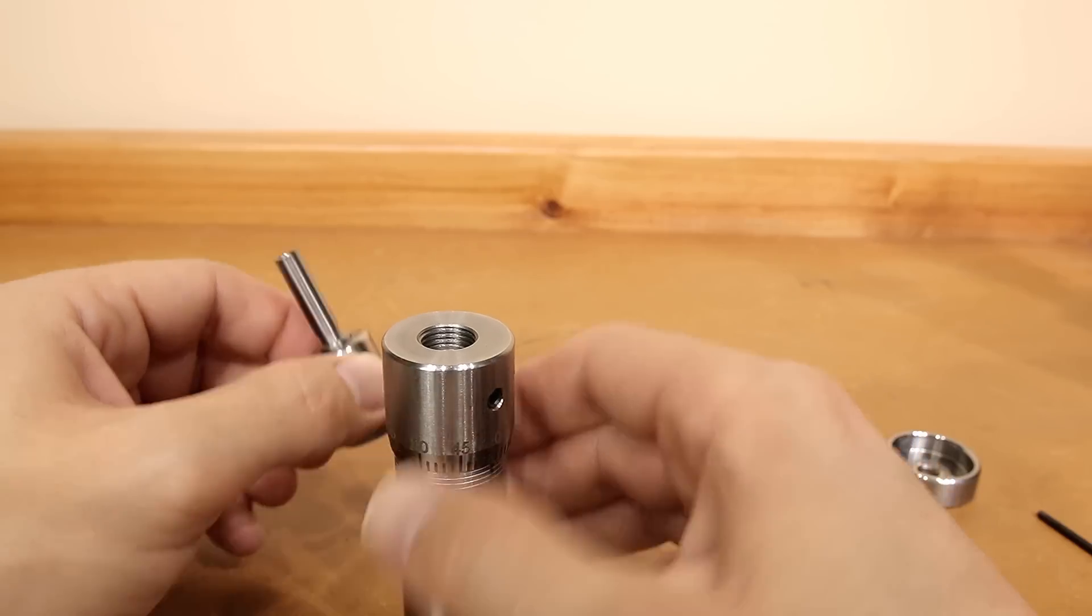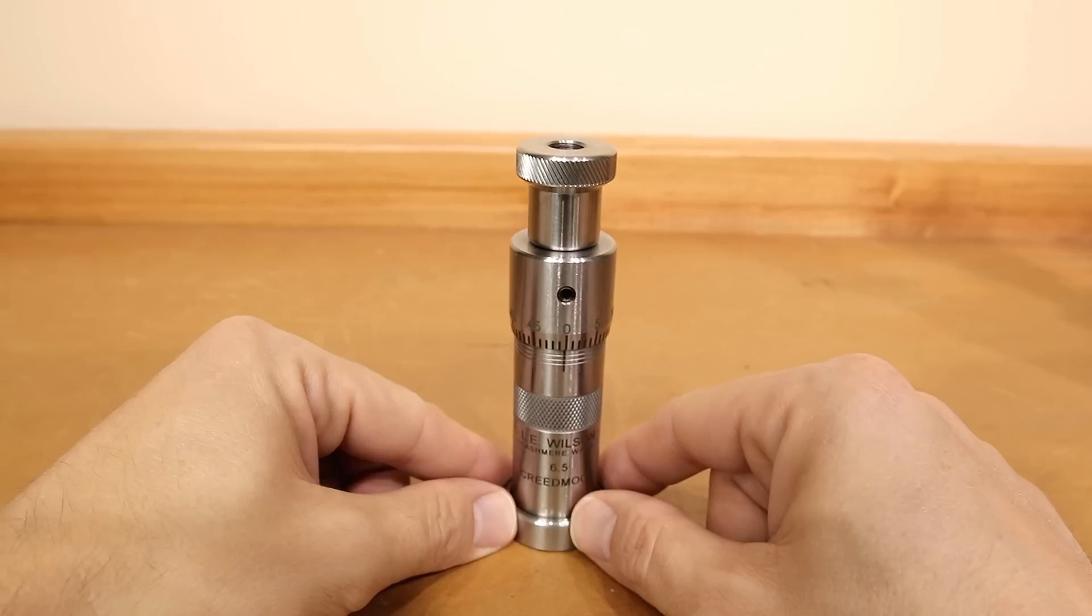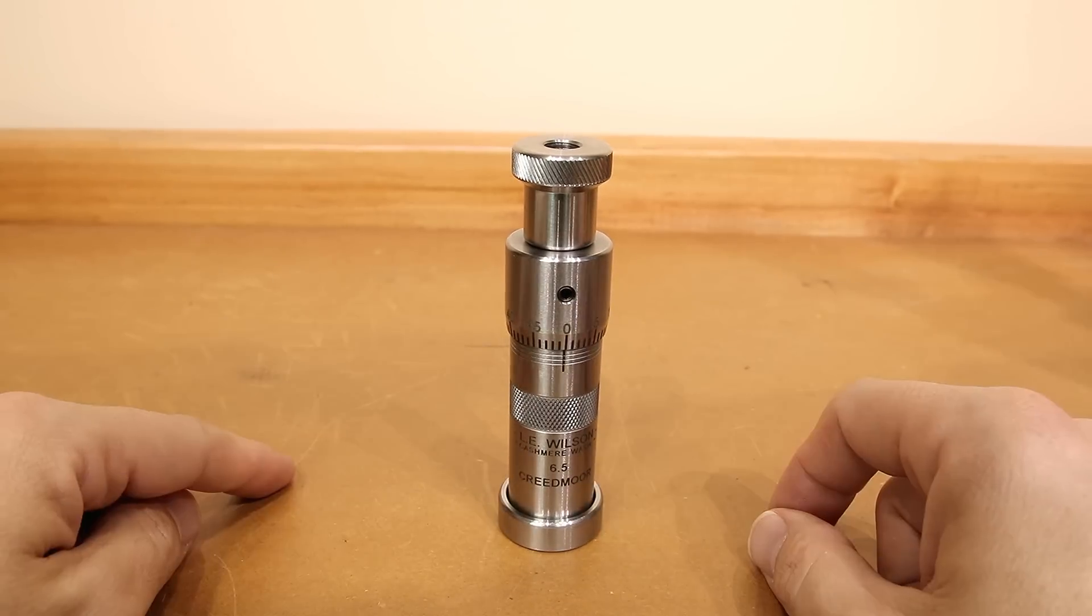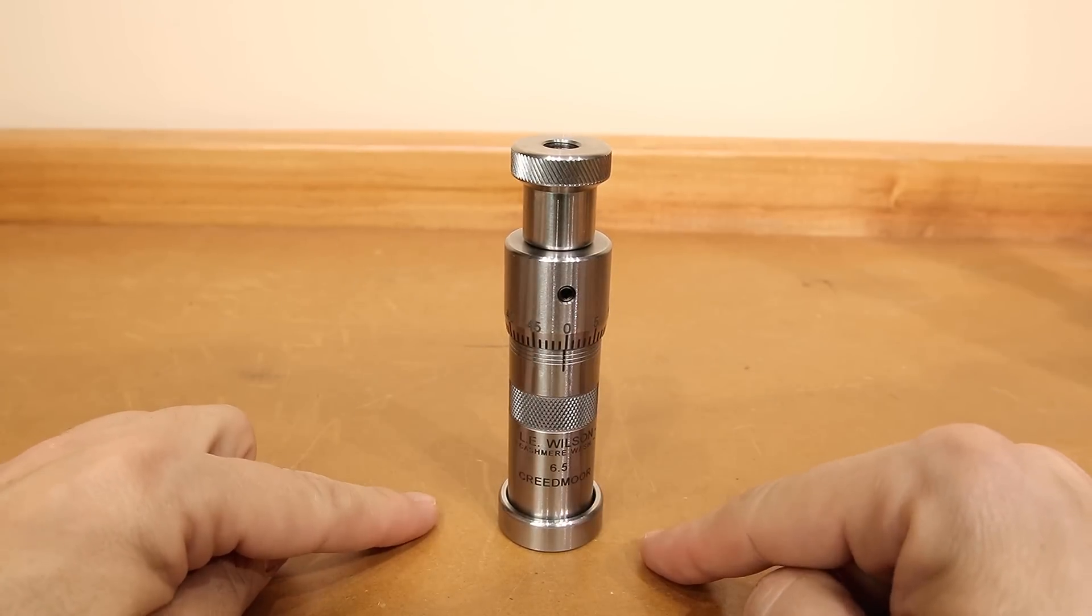After these two pieces are reassembled, we can insert our stem in our die body and add it back to the base and our die is assembled. So those are all the basic pieces of our die.